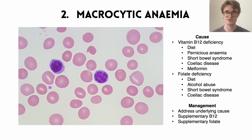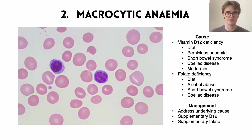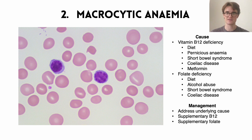Both B12 and folate deficiency can be caused by insufficient intake in the diet, particularly seen in veganism or ketogenic diets. For vitamin B12, a key cause is pernicious anemia — a lack of intrinsic factor, produced by parietal cells in the stomach, which allows B12 to be absorbed further down the gut. Short bowel syndrome causes a reduced functional gut area, reducing B12 absorption — this can be due to Crohn's disease. Celiac disease often affects the terminal ileum, a key site for B12 and folate absorption. Finally, metformin — a very common drug for type 2 diabetes — is a well-known cause of B12 deficiency.